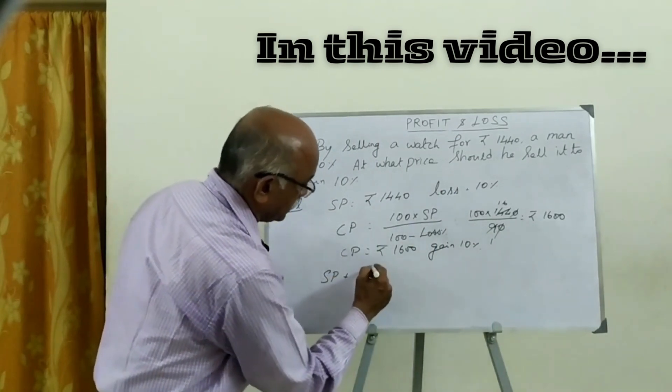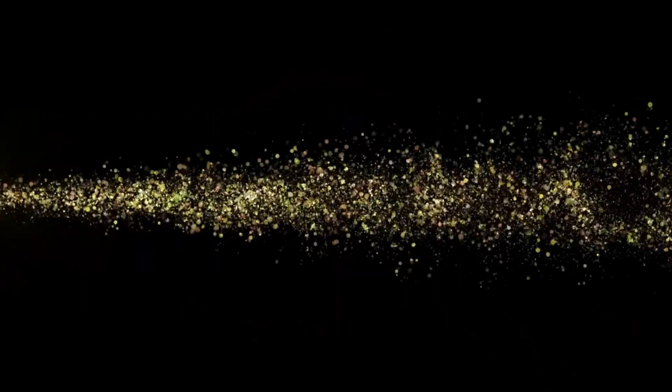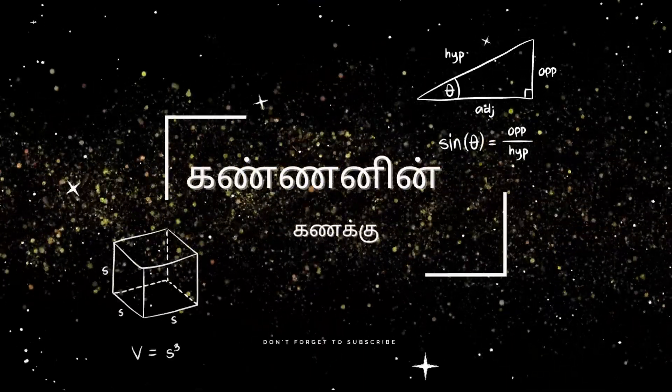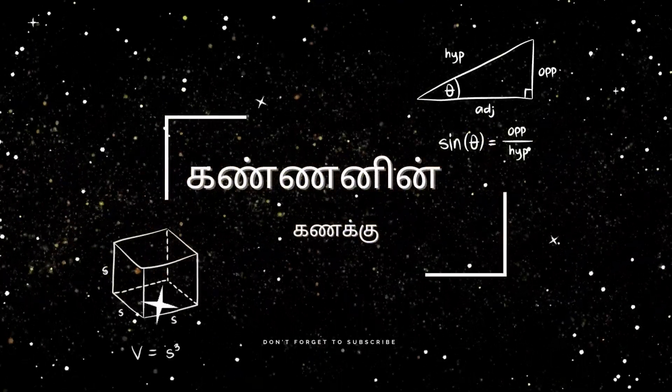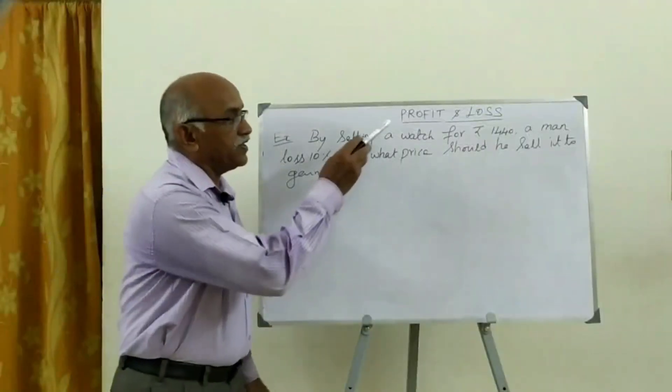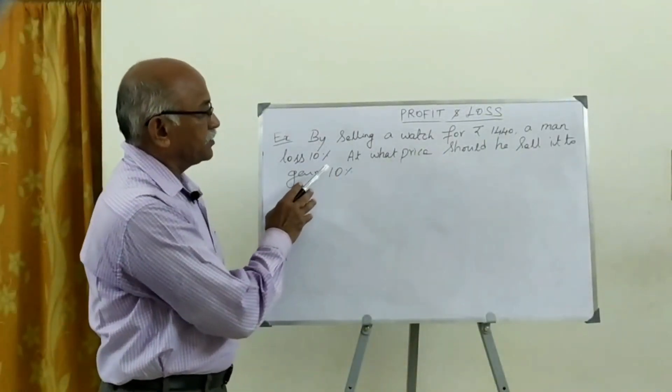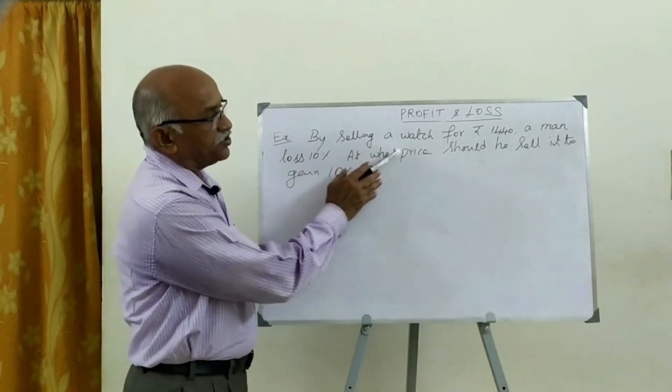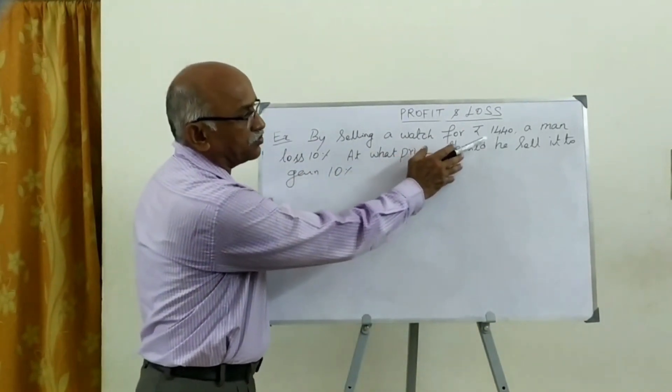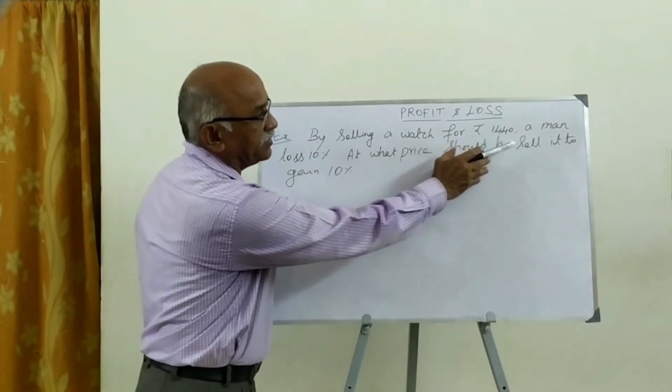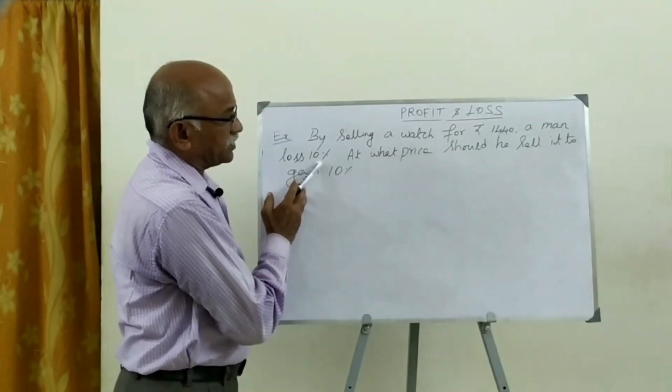SP is equal to 100. Profit loss, by selling a watch for Rs. 1440.